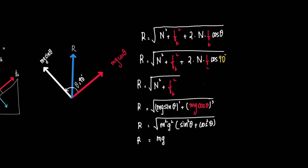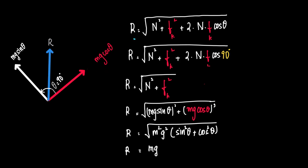Let R be the resultant of these two vectors. We know the resultant can be written as R equals root of N squared plus Fk squared plus 2·N·Fk·cos theta, where theta is 90 degrees. Since cos 90 equals zero, this term is eliminated. So R equals root of N squared plus Fk squared, which is root of (mg cos theta)² plus (mg sin theta)², which equals root of m²g²(cos²theta + sin²theta), which equals root of m²g², giving R equal to mg.